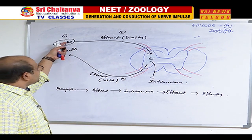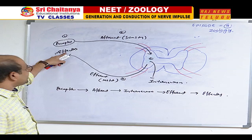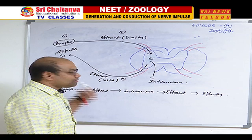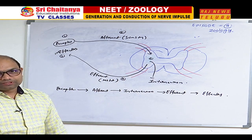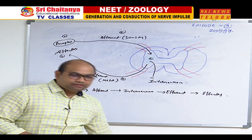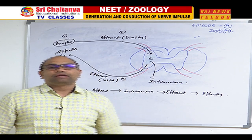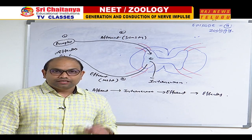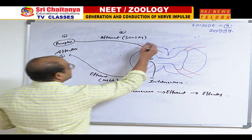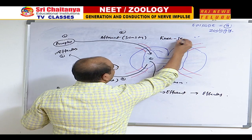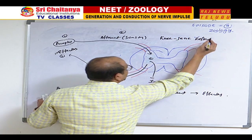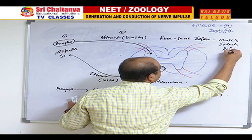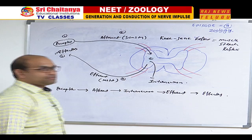Whatever stimulus passes through this arc and the response generated according to that stimulus — this total activity is called reflex action. To explain the reflex arc in detail, let me take one example. The example in NCERT to explain reflex action is the knee jerk reflex, which is also called muscle stretch reflex.